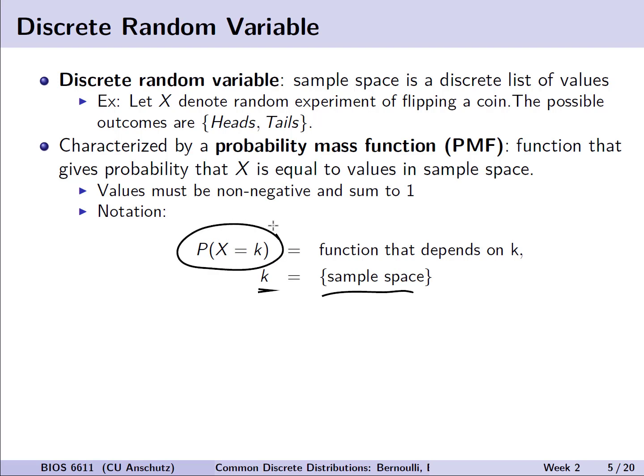The probability of X, our random variable being equal to K, will be some function which is our probability mass function that depends on K.